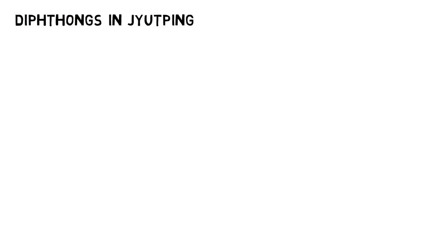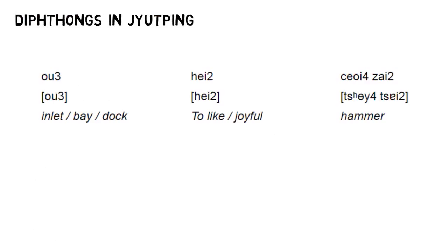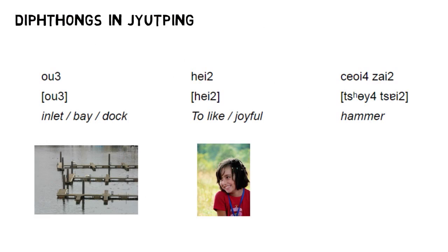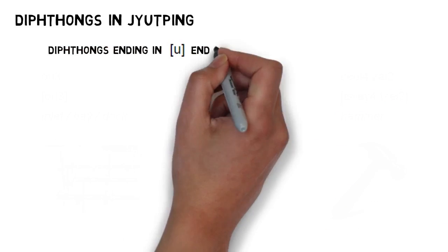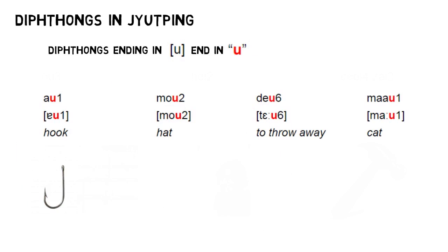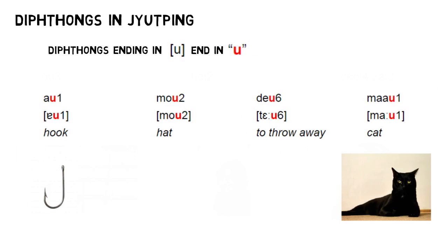We talked about how diphthongs are pronounced already in the last video. We have the vowels U and I, and they show up at the end of a word. I want to take a moment to discuss how these three diphthongs are written. First up, U. This one is super simple. Anytime you see the letter U at the end of a word, pronounce it as U. So here's 哦, 冇, 掉, and 冇.